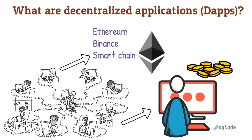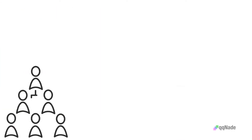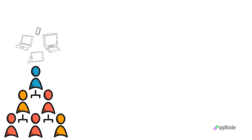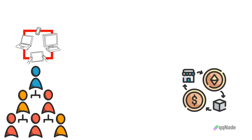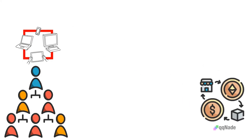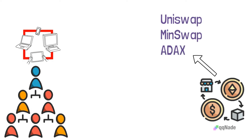Since the launch of Ethereum in July 2015, many decentralized applications have popped up. Blockchain-based decentralized apps rely on smart contracts for their functioning. Any app can be decentralized, so long as its running is distributed among several computers and its codebase is open-source.